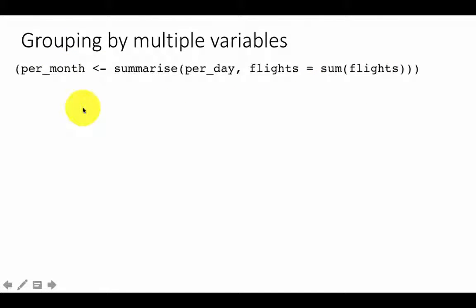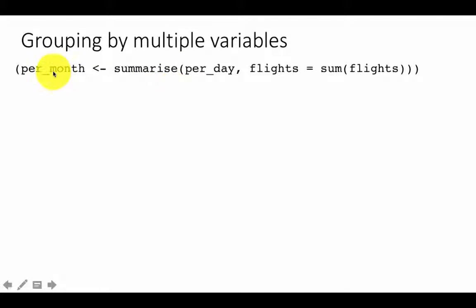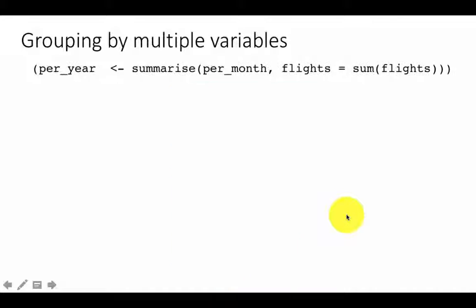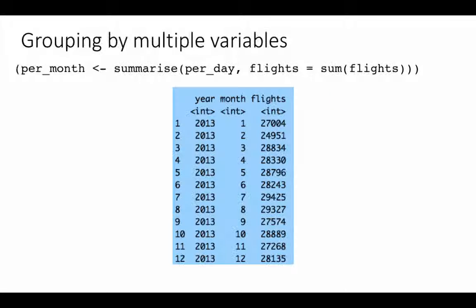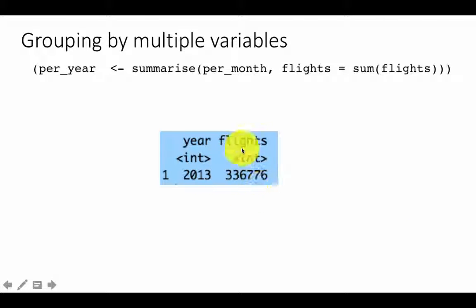Taking per_day and summarizing again sums the flights variable — because grouping by day is now gone, the next summarization automatically operates at the month level, giving flights per month. Since the data is for 2013, you get 12 results, one per month. Summarizing once more on the per-month result gives the total number of flights for the whole year — which matches the total number of rows in the original dataset.